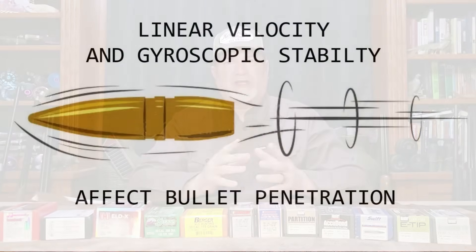Velocity also contributes to stability. A stable bullet will penetrate deeper and in a straighter path through any medium. In this regard, a bullet's linear velocity and its rotational velocity can lead to better penetration, so speed and barrel twist rate also come into play.